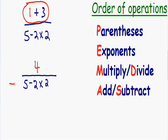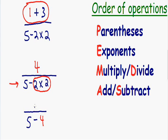Now that our top is finished, let's simplify the bottom of our fraction. Once again we need to use our order of operations. The bottom does not have any parentheses, so we can skip our first order of operations. The bottom does not have any exponents, so we can skip that step. The bottom does have multiplication and division, so the first thing we need to do is multiply two times two. Two times two is equal to four, and the rest of the expression stays exactly the same. In the bottom we have five minus four, and in the numerator we also have a four. We still have not completely simplified the bottom — five minus four is equal to one.